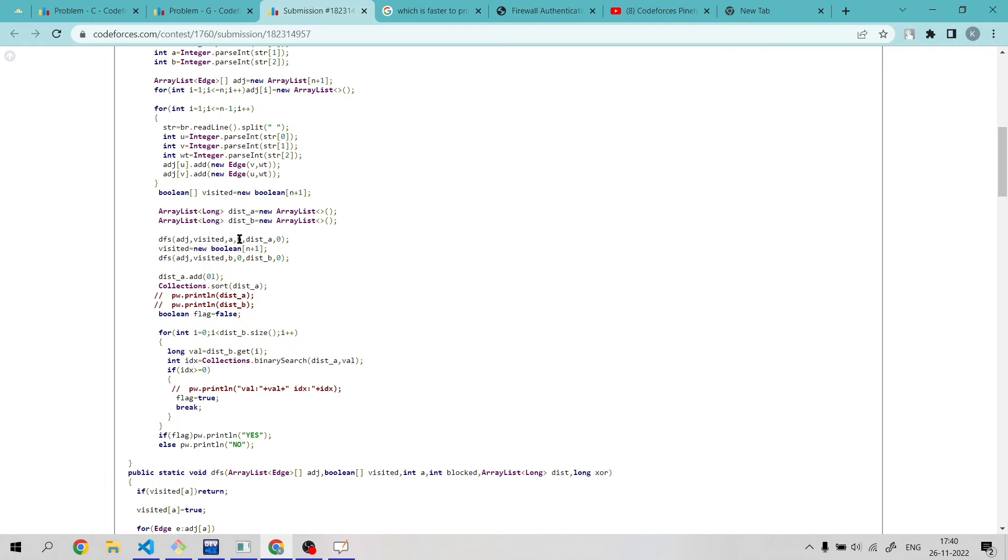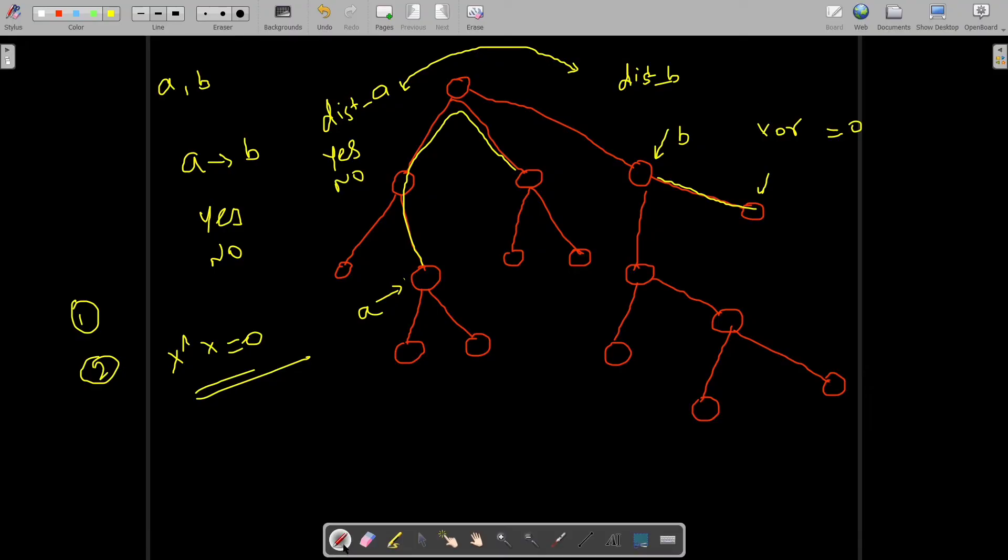And this B is blockage. Let's see why I have sent this B while starting DFS from vertex A. You should keep in mind that this DFS shouldn't cross this B. That's why I have sent this B as a blockage.